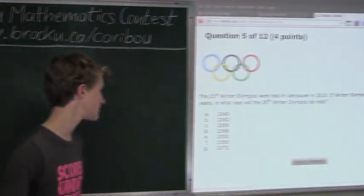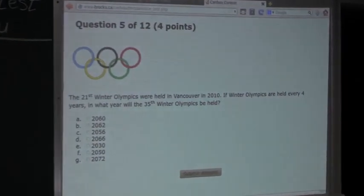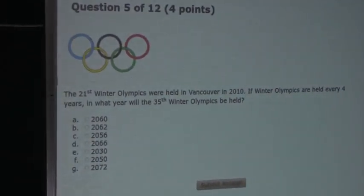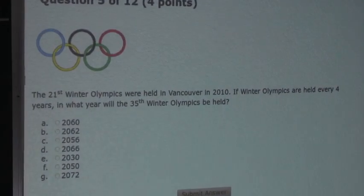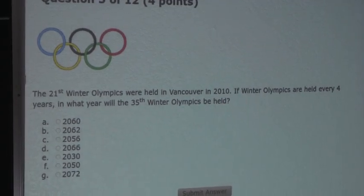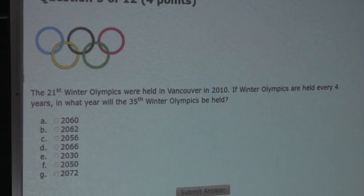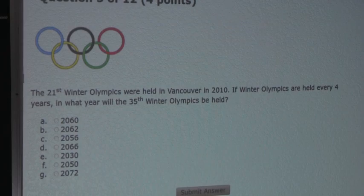So the question is, the 21st Winter Olympics were held in Vancouver in 2010. If Winter Olympics are held every four years, in what year will the 35th Winter Olympics be held?